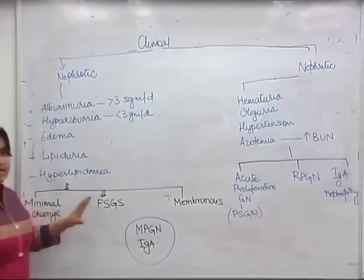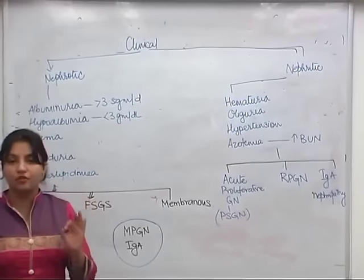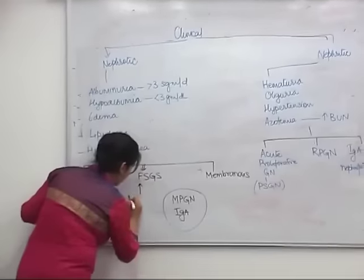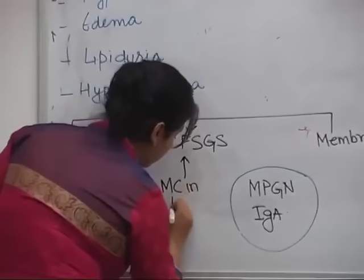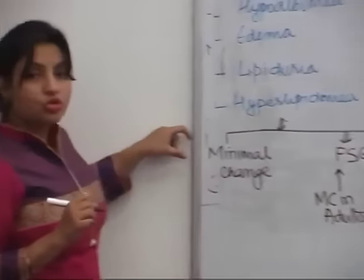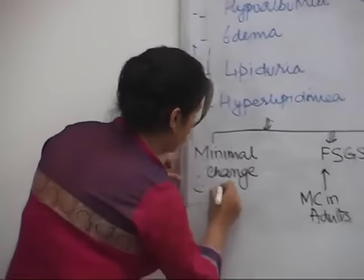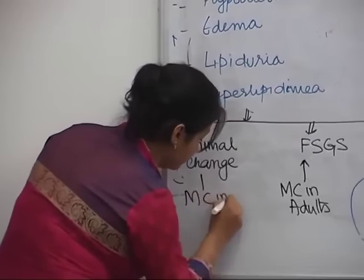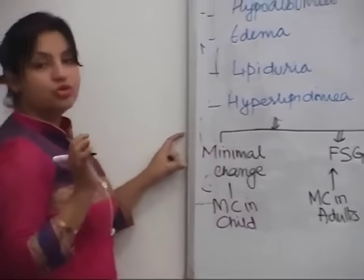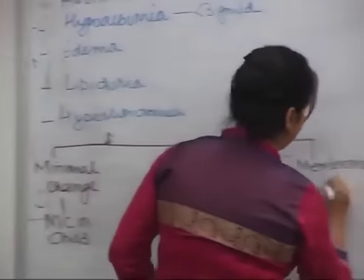The most common cause of nephrotic syndrome in adults is FSGS. The most common cause of nephrotic syndrome in children is minimal change disease. The most common cause of nephrotic syndrome in elderly is membranous nephropathy.